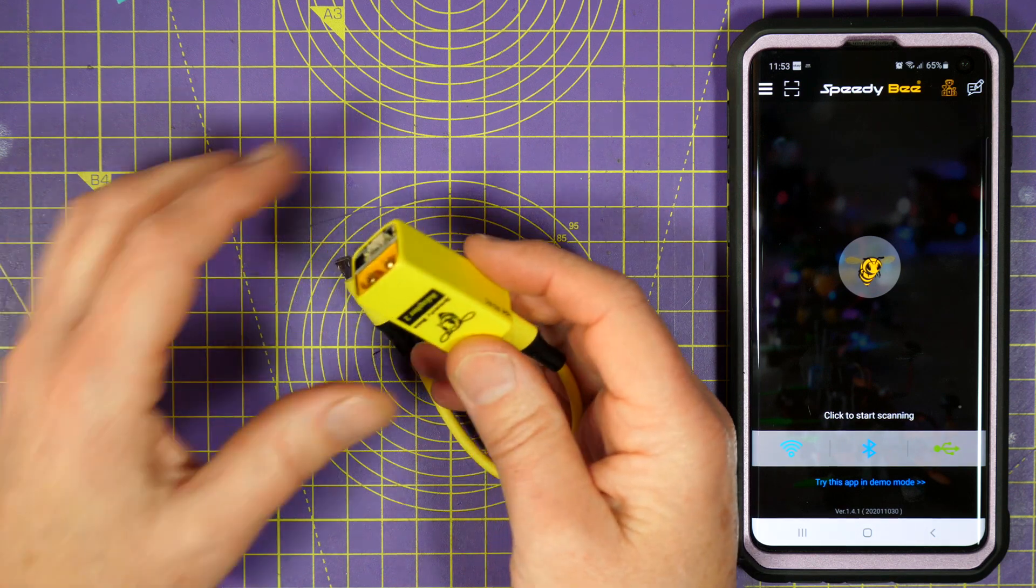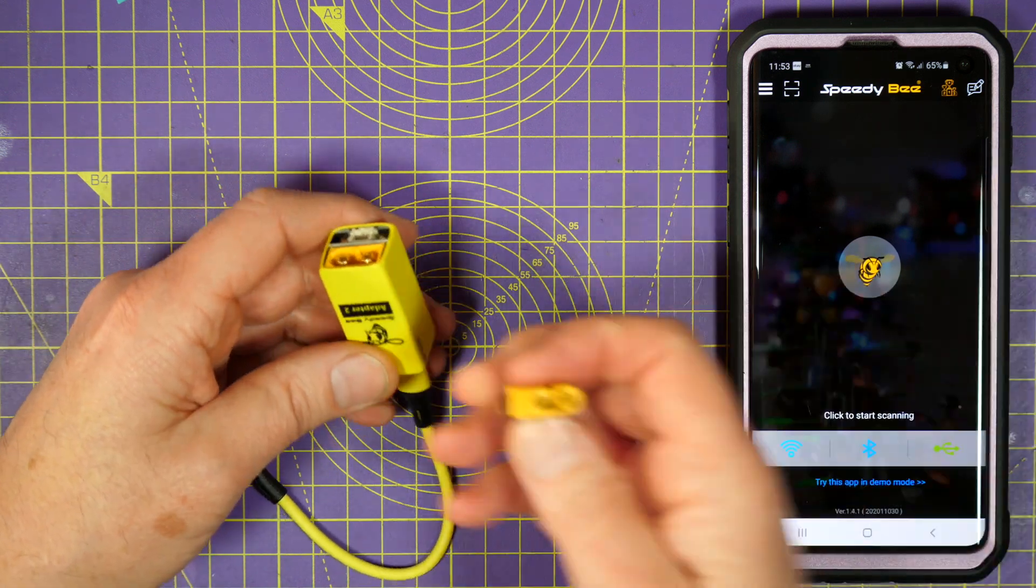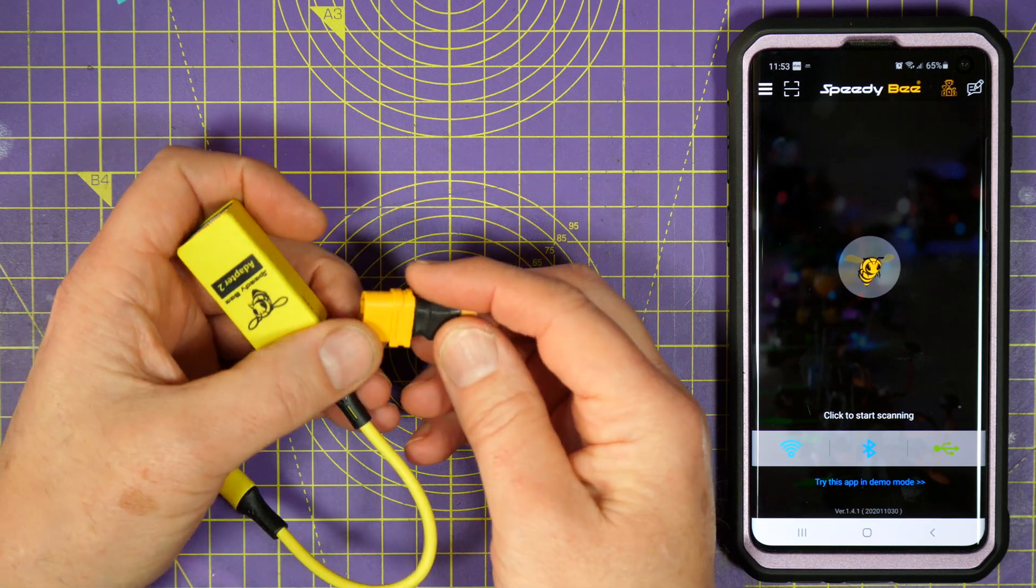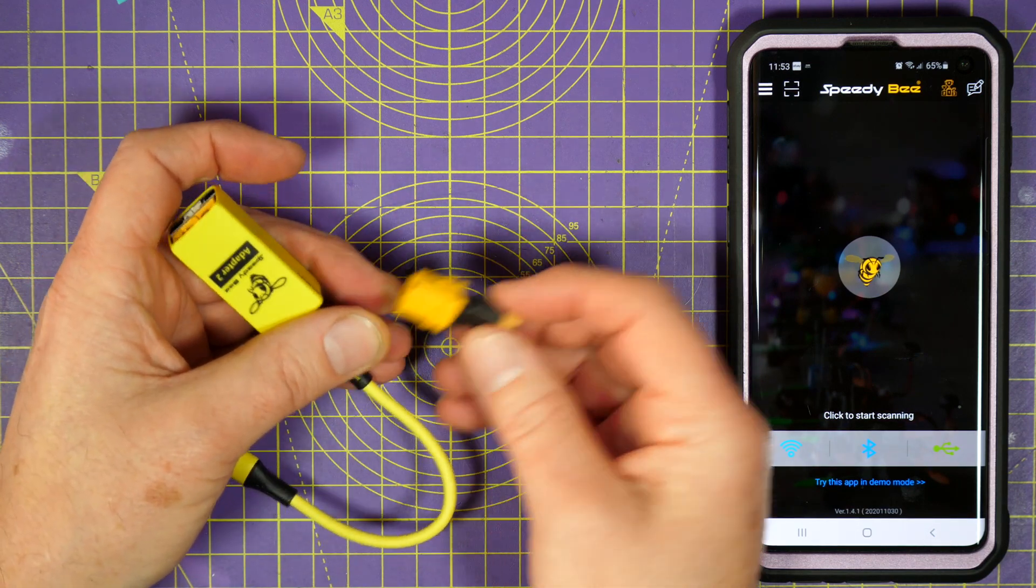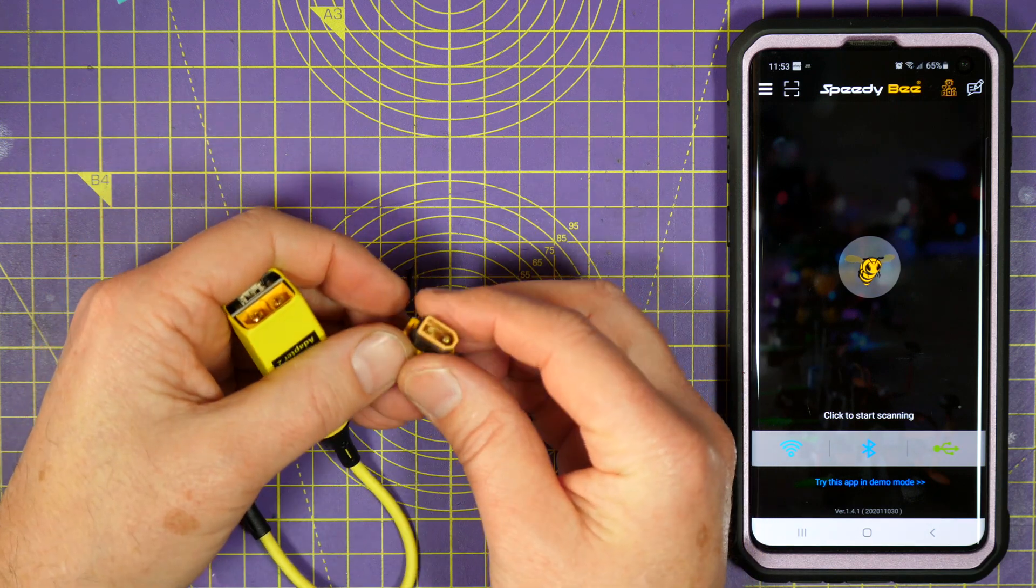If you're using a battery with an XT30 then it's easy enough to use an XT30 to XT60 adapter like this. I made loads of these a while ago and I'll just leave them in my flight bag, they're just very useful.